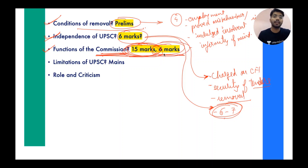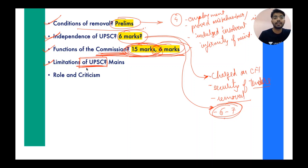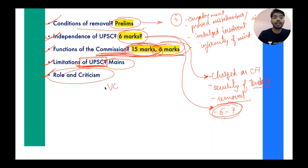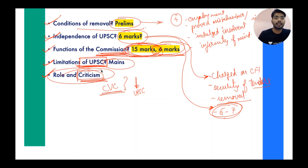Next is the limitations of UPSC, which we will see in the Plus class. UPSC can make recommendations, but they are only advisory — they are not mandatory or binding, meaning the disciplinary action need not necessarily be taken. These limitations can be asked in mains. Then look at the role and criticism — since the Central Vigilance Commission came, the role of UPSC has declined considerably. It is criticized because its function remains merely advisory, with no binding or compulsory role.